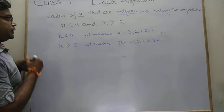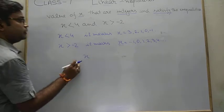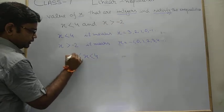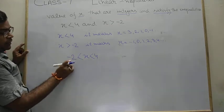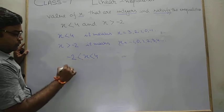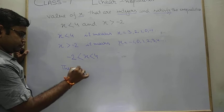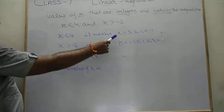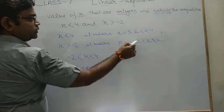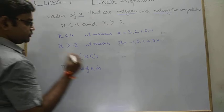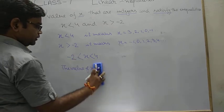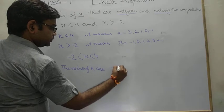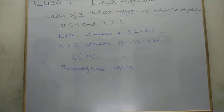Combining both: x is greater than −2 and x is less than 4, so −2 < x < 4. We check which integers are common in both sets. The common integers are: −1, 0, 1, 2, 3. Therefore, the values of x are −1, 0, 1, 2, 3. This is your solution.